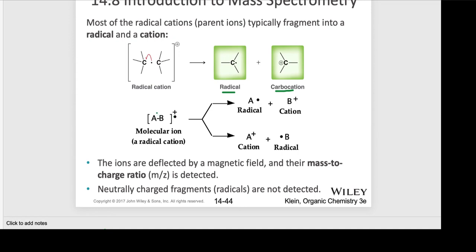In general terms, this can go either to the left — then we have the radical character on one side — or to the right — radical character on the right — and then the corresponding cation. We can only detect the cation in the spectrophotometer, but since it goes both ways, eventually we'll detect the cation on both sides. Ions are deflected in the magnetic field and determined by the mass-to-charge ratio. Neutrally charged fragments and radicals are not detected — only cations are shown in the spectrum.